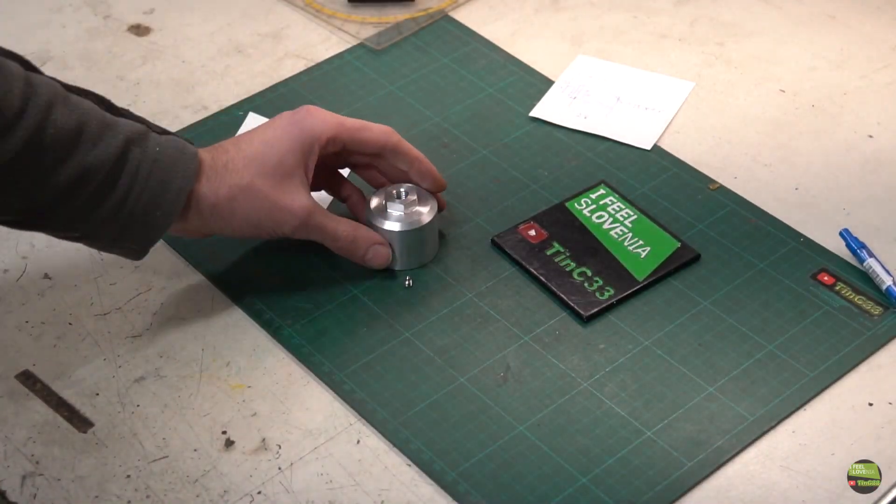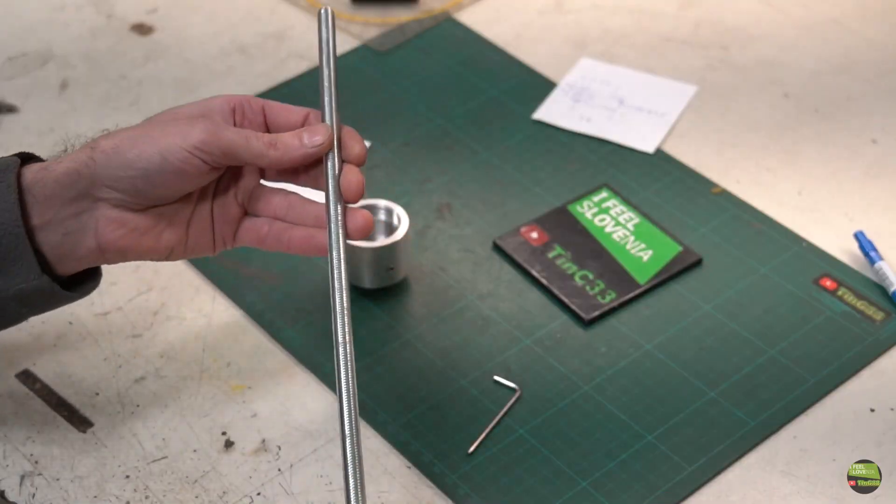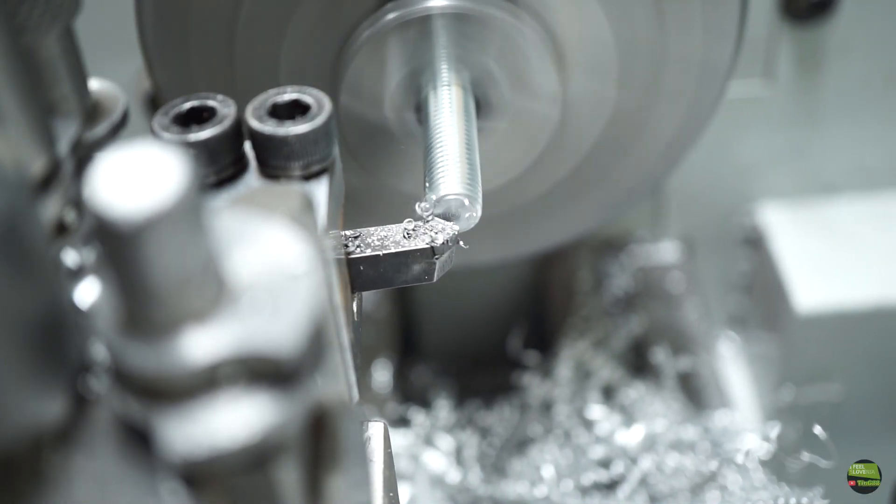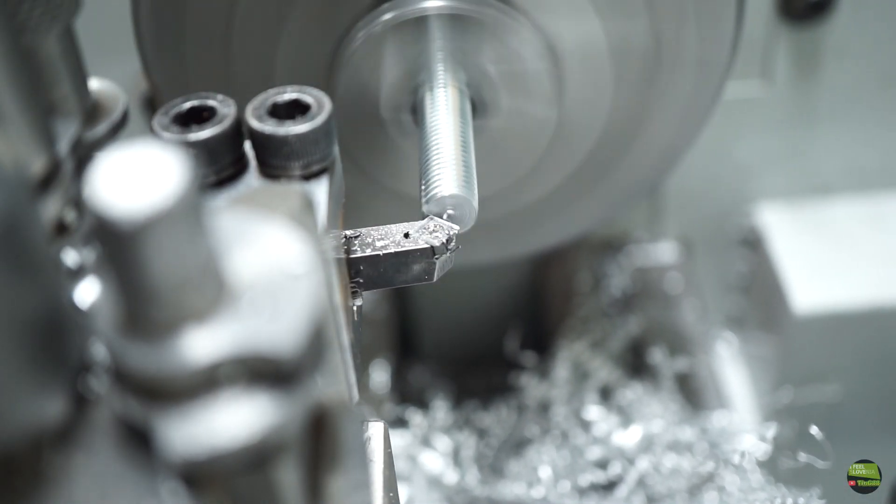Now the nut area is finished, so I can prepare the rod. It's already a good length, about 40cm, so all I need to do is face both ends, cut some thread away, and of course cut a chamfer.